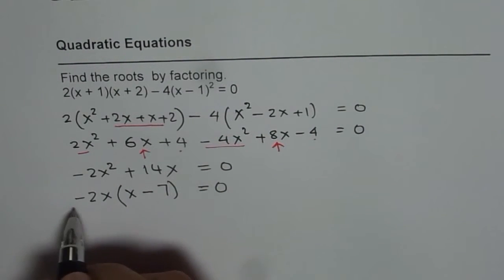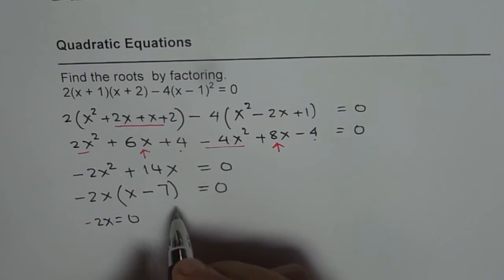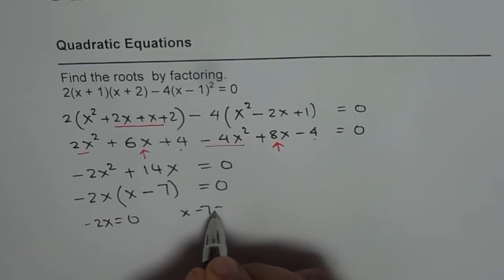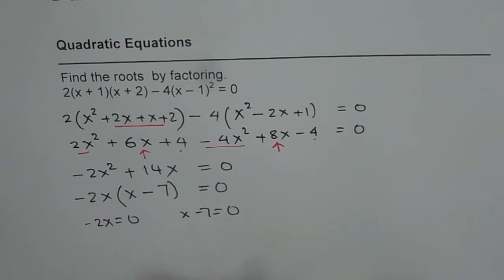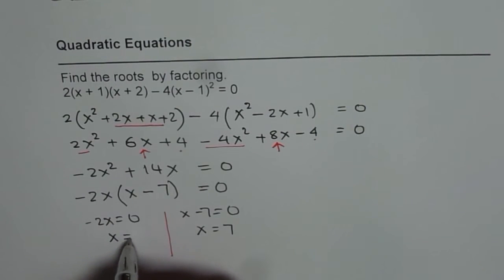Now either -2x = 0 or x - 7 = 0. So these are two possible solutions. So that gives us x = 7 and this gives us x = 0.